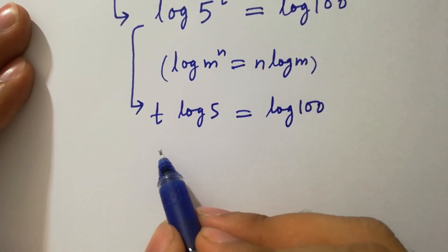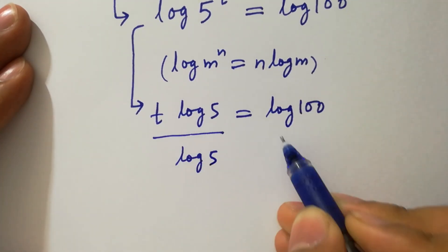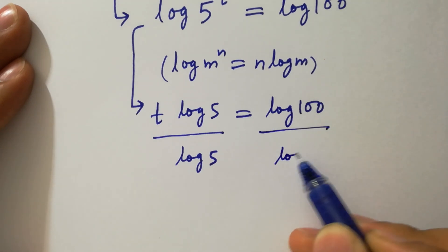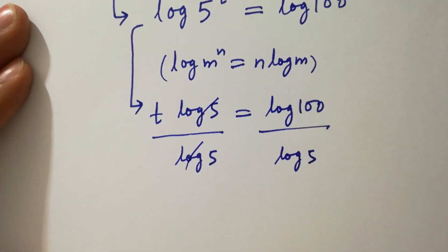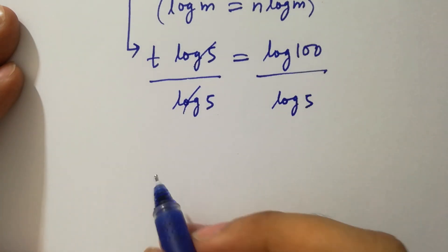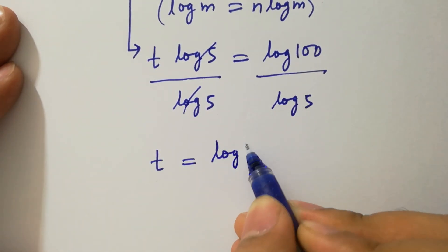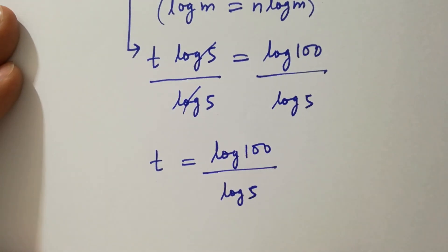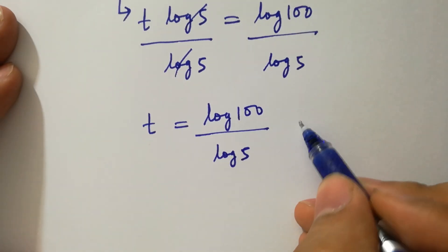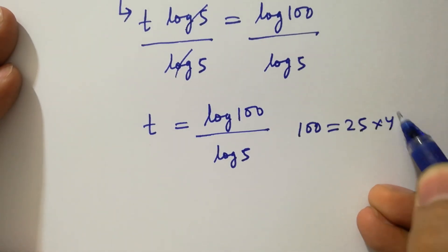To find t, divide by log 5 on both sides, where log 5 cancels, giving t equals log 100 over log 5.